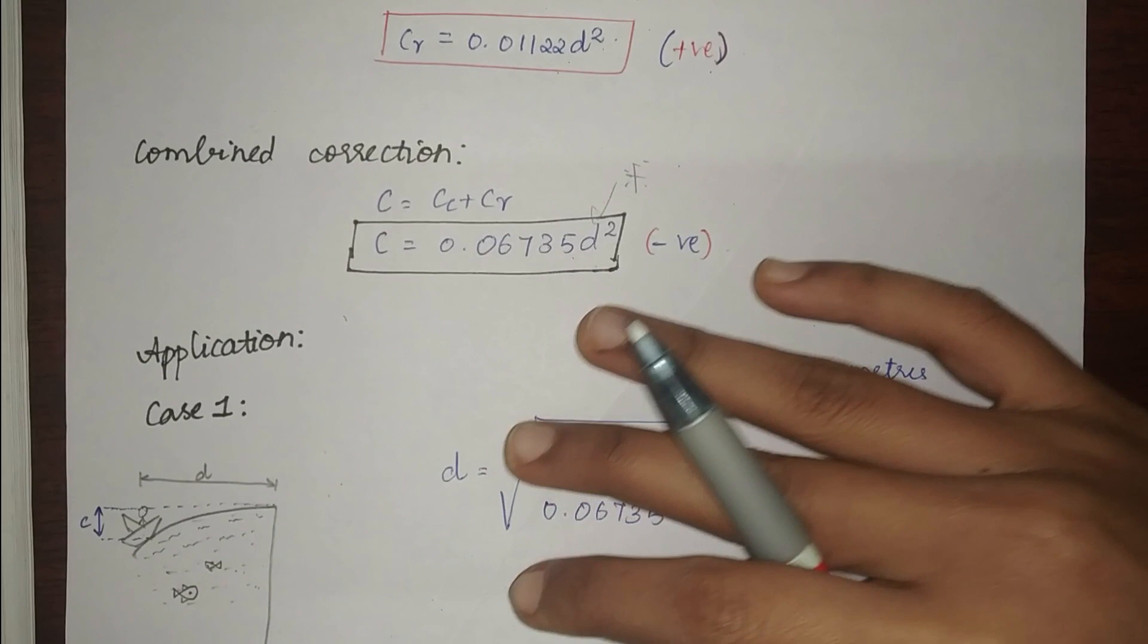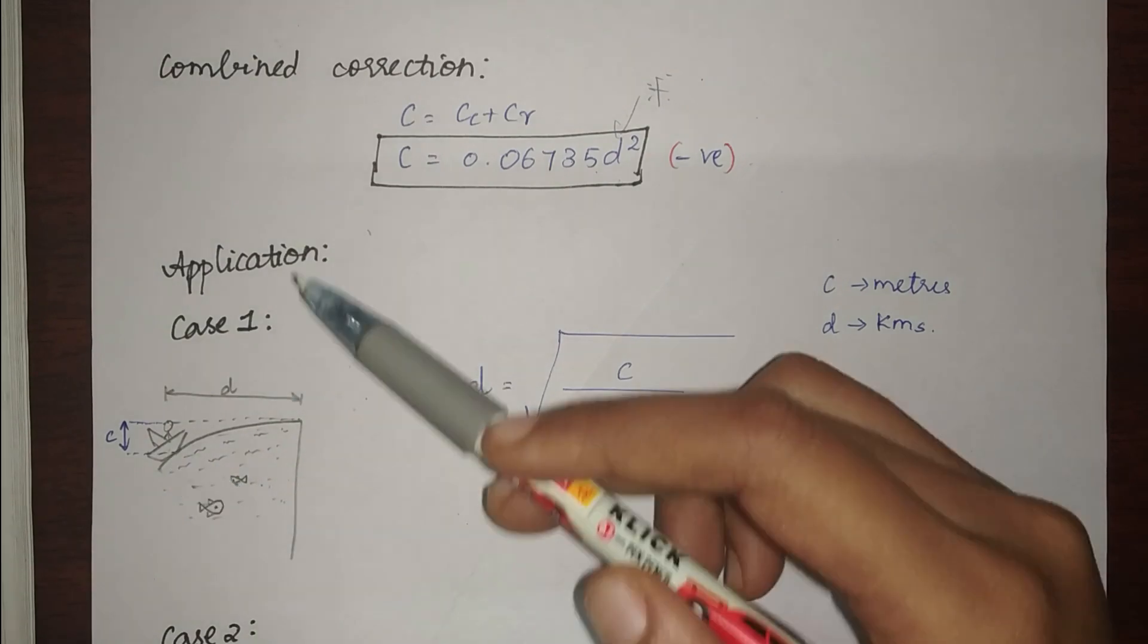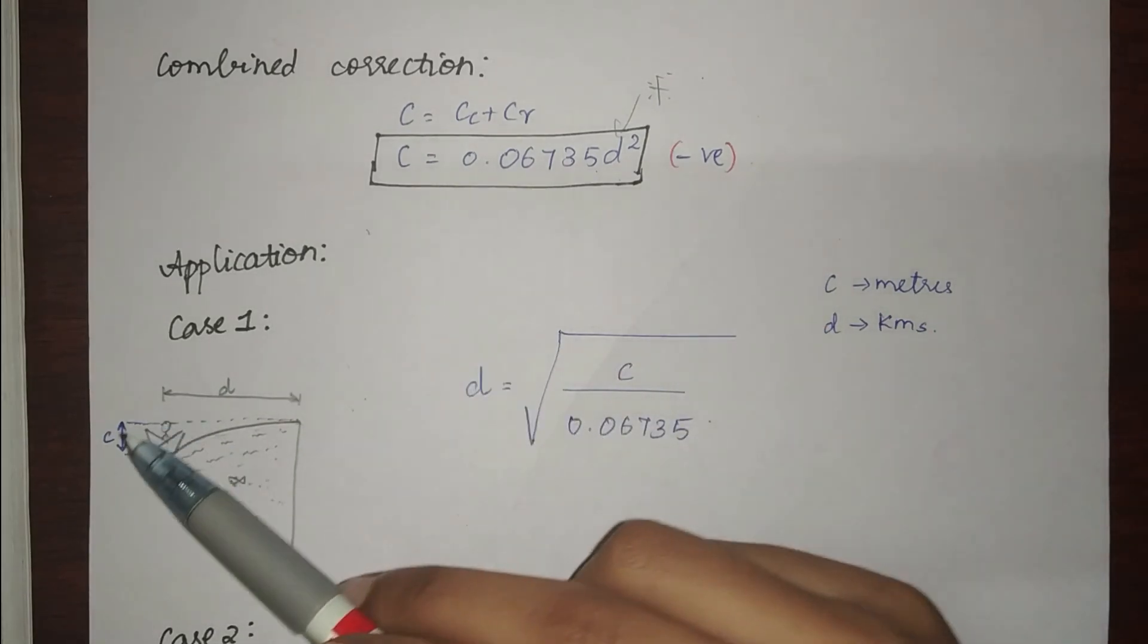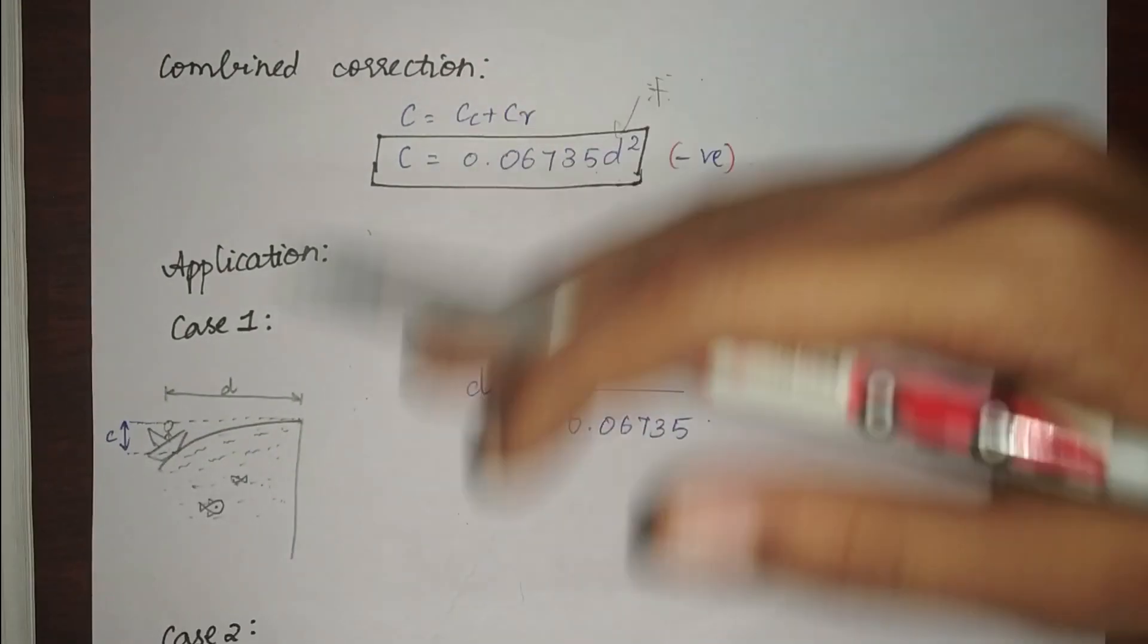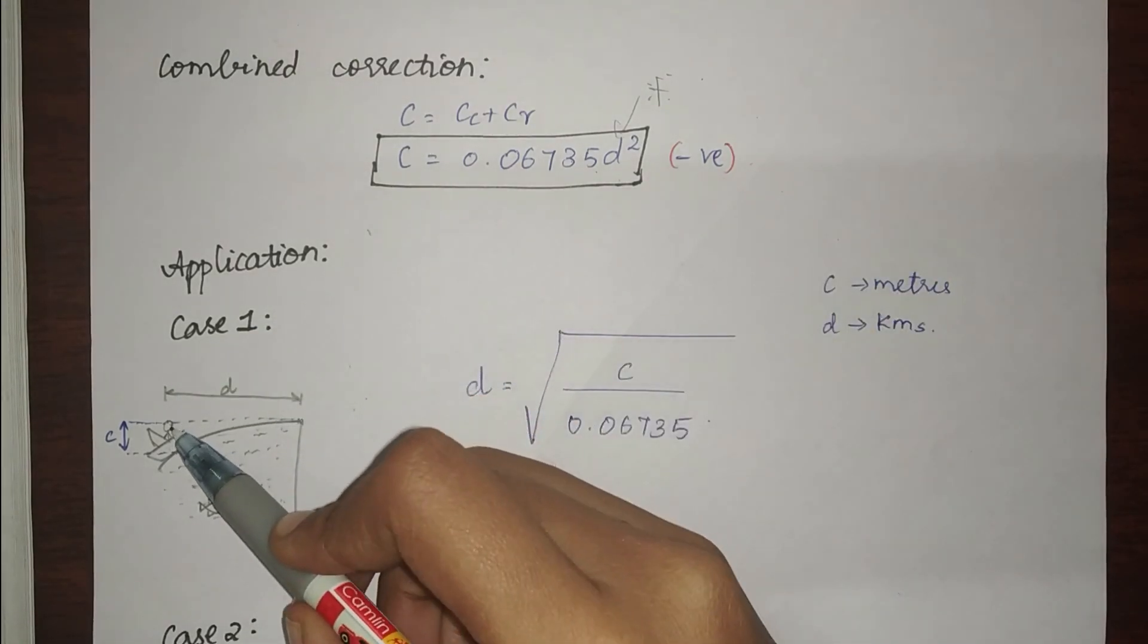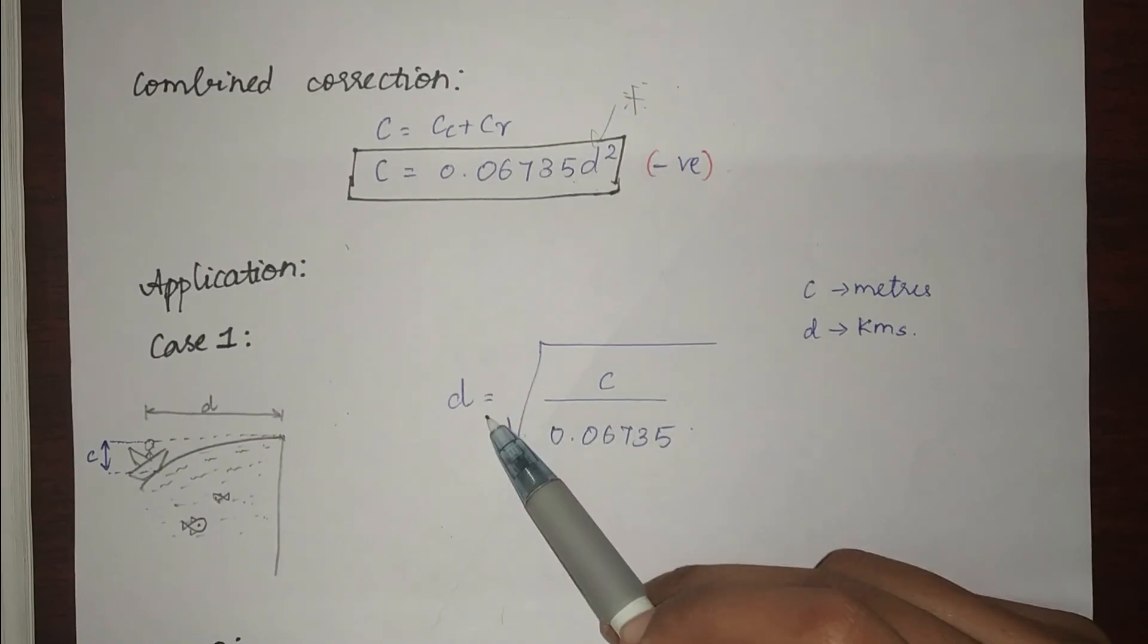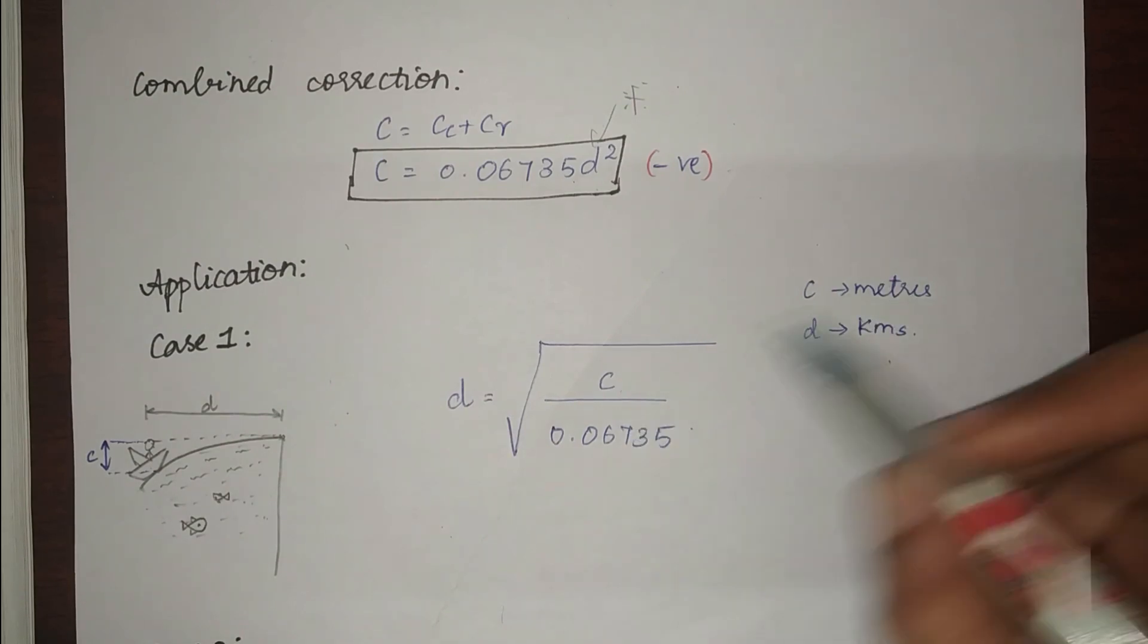Say case 1. You are traveling in a ship or boat and say you are in the middle of the ocean. So all that you see is the sea, the horizon. Have you ever wondered what is the distance between you and the point of horizon? It always keeps moving away and away. Whenever you come closer, it keeps moving. Have you ever wondered what is the distance between that point and you? So if you have wondered, now comes the answer that from this combined correction formula, we can find the distance.